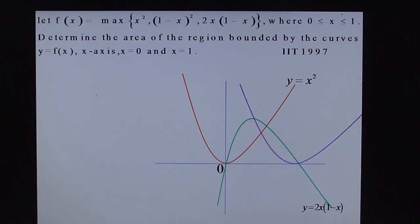Next third one, this is y equal to 1 minus x whole square. Now you can find the point of intersections by solving these three. So these three points are nothing but 1 by 3, 1 by 2 and 2 by 3.